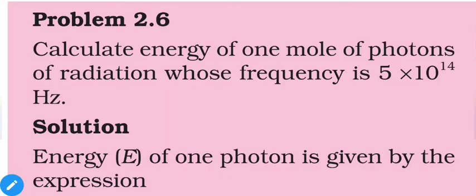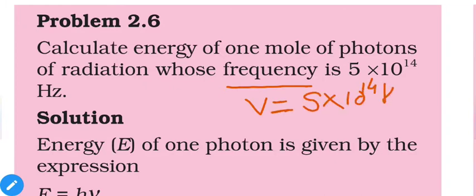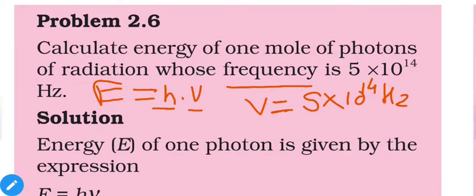Now let us discuss some numericals. Calculate the energy of one mole of photons of radiation whose frequency is 5 × 10¹⁴ Hz. We need to find the energy of the photon. Only frequency is mentioned: ν = 5 × 10¹⁴ Hz. The equation for energy of a photon is E = hν, that is Planck's constant multiplied by frequency.